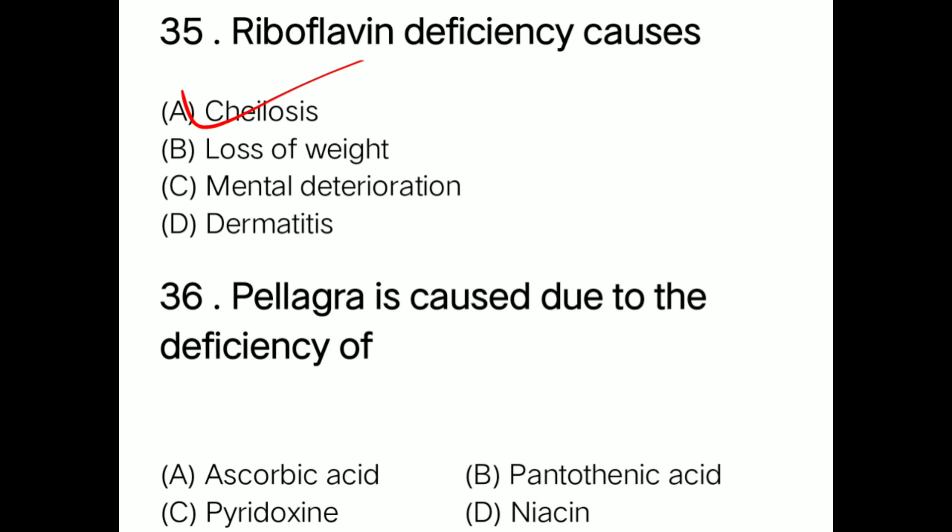Question: Pellagra is caused due to the deficiency of option A ascorbic acid, option B pantothenic acid, option C pyridoxine, option D niacin. Correct answer is option D: niacin. Pellagra is caused by deficiency of niacin.